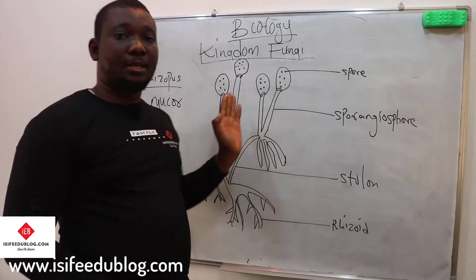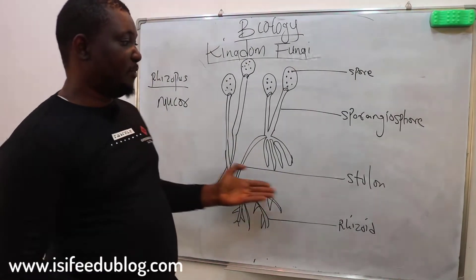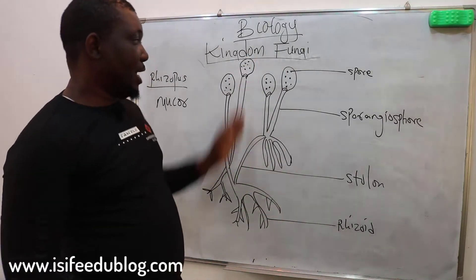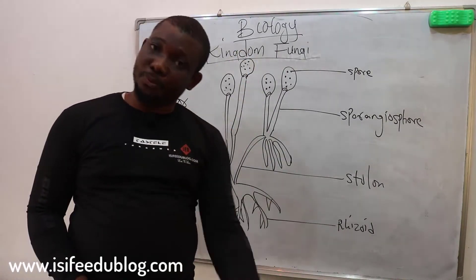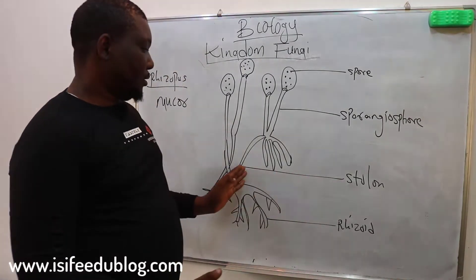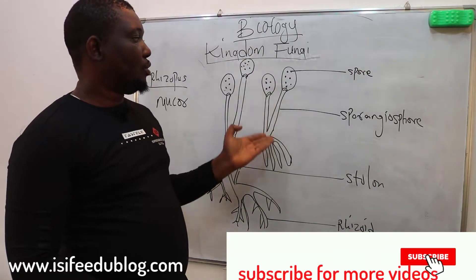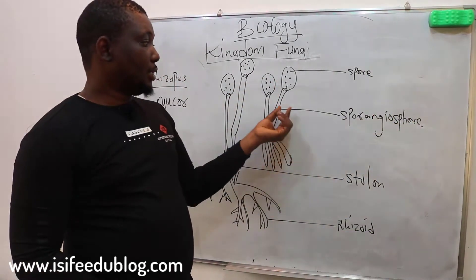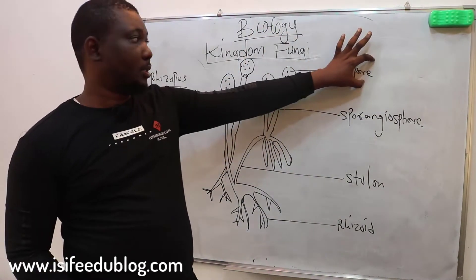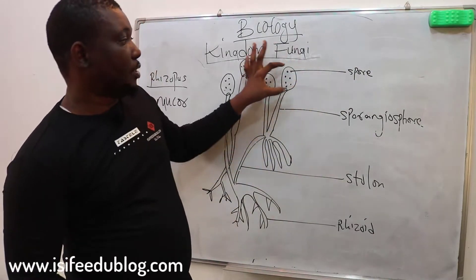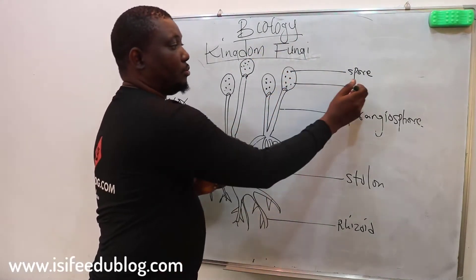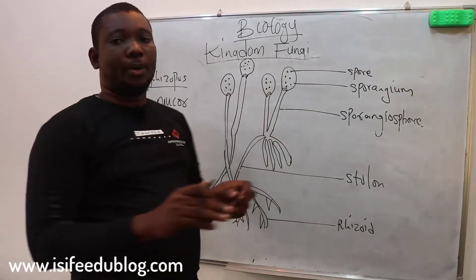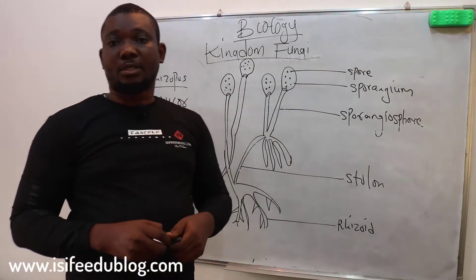That's where you see this fungi growing. You see the vegetative parts — the rhizoid that anchors them firmly on food, stale food. You see the stolon that helps in the growth of new vegetative parts. The sporangium holds each of the spores. The sporangium is the sac or the capsule that contains numerous spores.